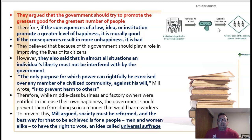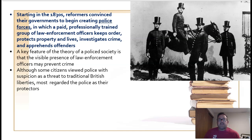His thinking held that if democracy was increased — more people got to vote — society would naturally become more moral and more utilitarian. One of the first things we see as a result of utilitarianism is the development of professional police departments. In the photo, you can see early English police officers — they weren't called that, they were called Bobbies, named after Prime Minister Robert Peel.